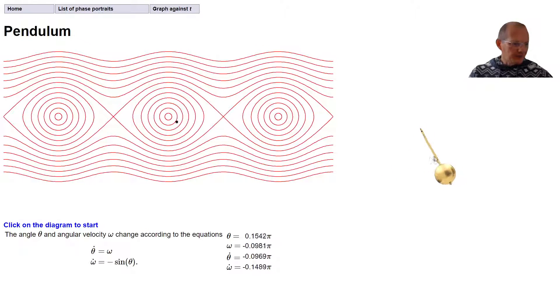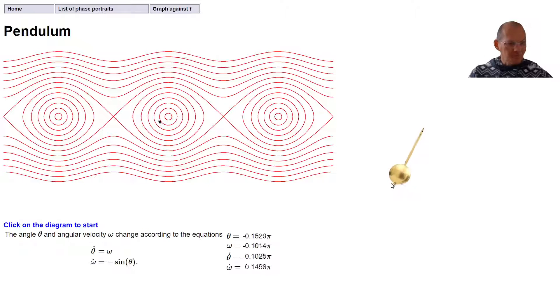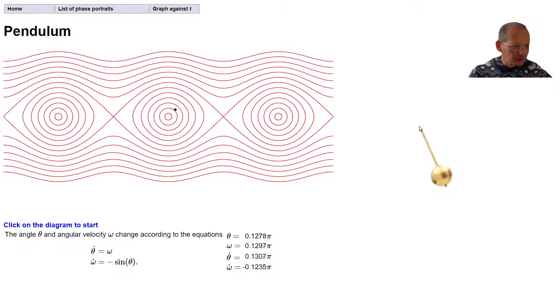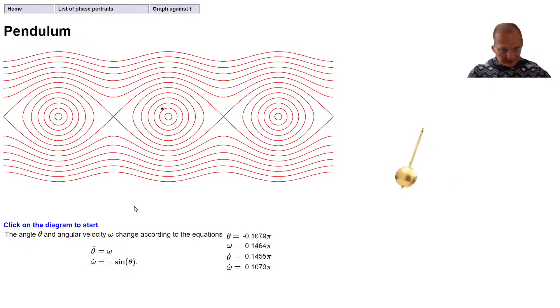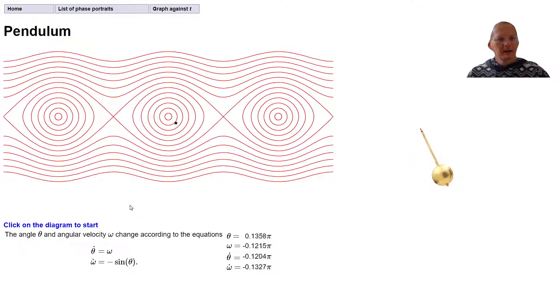When we're over to the right, theta is going to be positive, and when we're swinging over to the left, theta is going to be negative — it's the angle from the vertical line to the bar of the pendulum. Then there's omega, which is the angular velocity, the rate of change of theta.